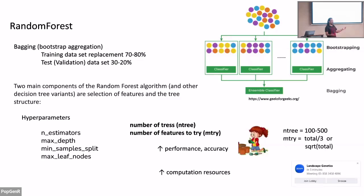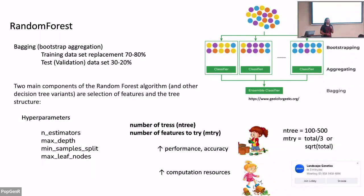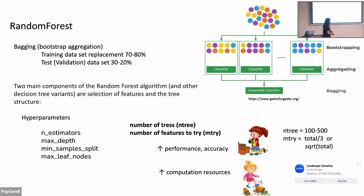More trees gives higher accuracy but uses more computing resources and can crash or never finish. As a rule of thumb, trees between 100 and 500 work very well — the default in random forest is 500. The number of features tried per split defaults to total SNPs divided by 3 for regression, or the square root of total SNPs for classification. However, the number of trees rarely needs to exceed 600, while the number of features per decision is more variable — I'll demonstrate with an example.